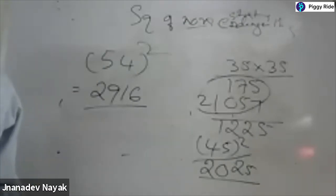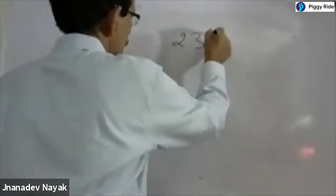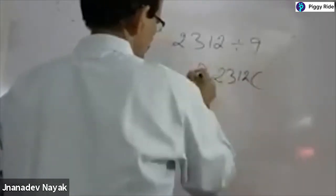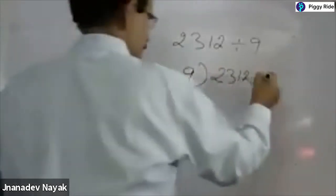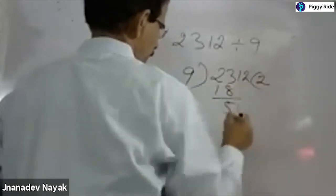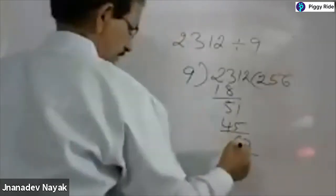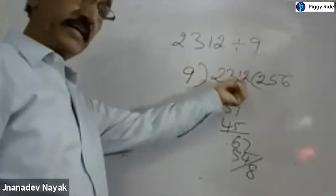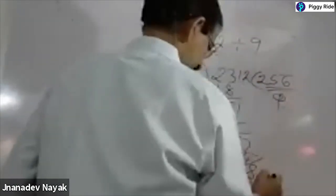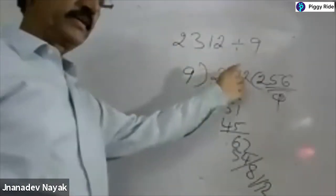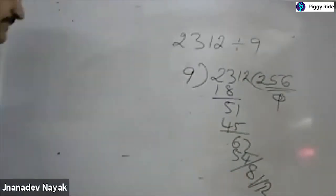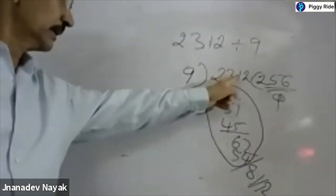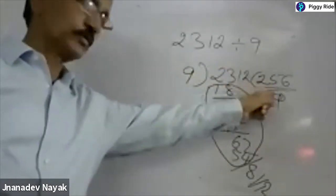Now I will show you one division method that will be very easy. Take 2312 divided by 9. In normal math you would go through several steps — 9 twos are 18, 9 fives are 45, and so on. But in Vedic Math — this is called the dividend, this is the divisor, this is the quotient, and what is left out is the remainder. Directly you can write the quotient and remainder without all those steps.